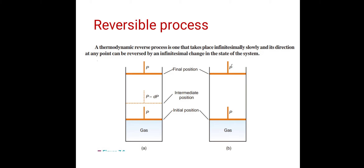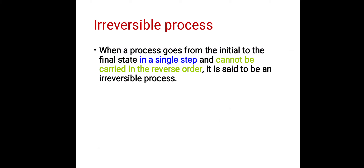In a reversible process the changes take place slowly, whereas in an irreversible process the changes take place suddenly. This covers the definitions of these two processes.